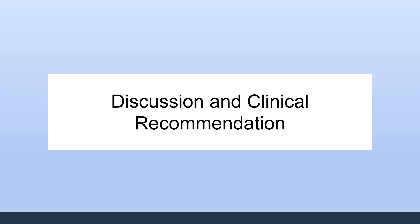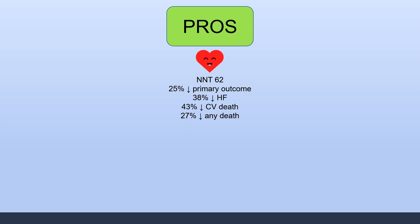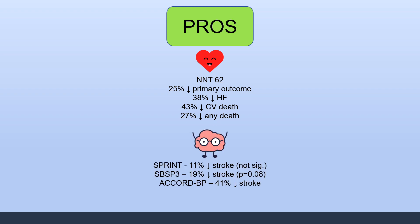Moving to the discussion and clinical recommendations after reviewing the SPRINT trial: the key benefit of intensive blood pressure treatment was that cardiovascular outcomes were significantly improved — a 25% decrease in the primary outcome, a 38% reduction in heart failure, a 43% reduction in cardiovascular death, and a 27% reduction in death from any cause. The number needed to treat was 62. The SPRINT trial also found an 11% decreased risk of stroke, though this was not statistically significant.